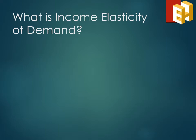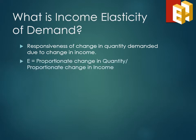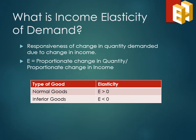Finally, we have the income elasticity of demand. It is the responsiveness of the change in quantity demanded due to change in income, represented mathematically as the proportionate change in quantity demanded divided by the proportionate change in income. These goods can also be classified as normal goods or inferior goods. For normal goods, elasticity is greater than zero, implying that with an increase in income, the demand for those commodities increases. For inferior goods, elasticity is less than zero, implying that with an increase in income, the demand for inferior goods decreases.